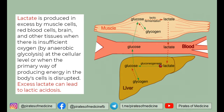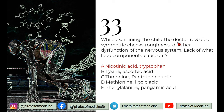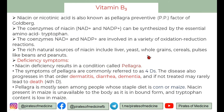Lactate is produced — we have all read about muscle cramps in pre-medical school. The next question, Q33: while examining a child, the doctor revealed symmetric cheek roughness, diarrhea, and dysfunction of the nervous system. They ask: lack of what food component caused it? Remember, vitamin B3 is called niacin or nicotinic acid, also known as the pellagra-preventive factor of Goldberg. I'll tell you a small story — Goldberg was a scientist who did a very interesting experiment.